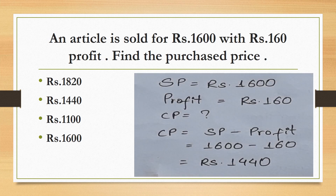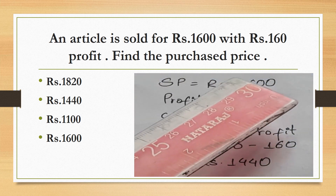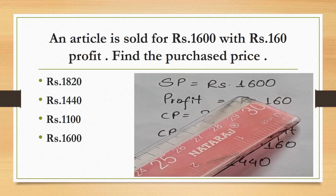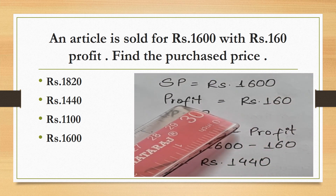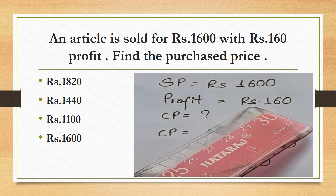An article is sold for Rs.1600 with a profit of Rs.160. Find the purchase price (cost price). Selling price = Rs.1600, profit = Rs.160.